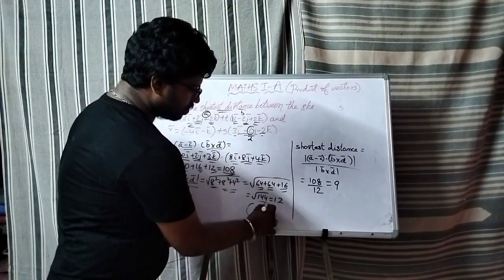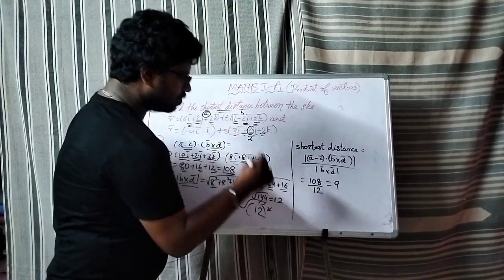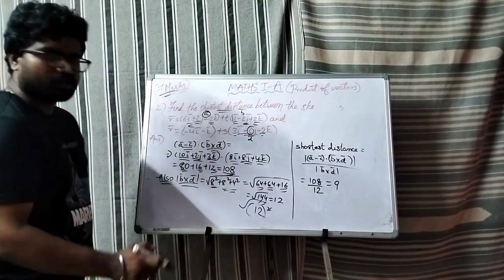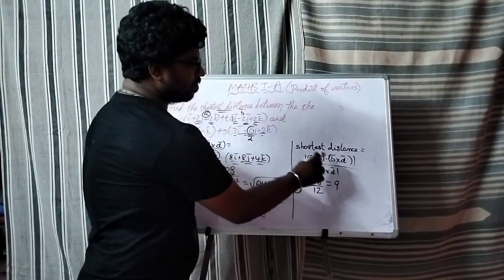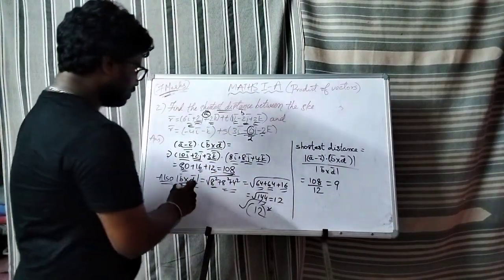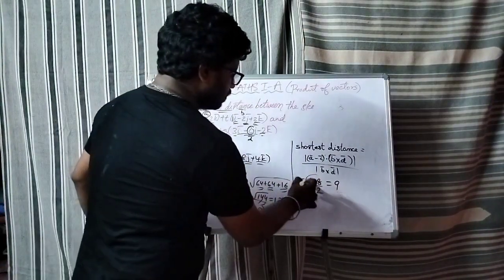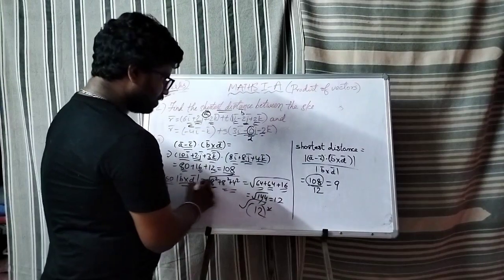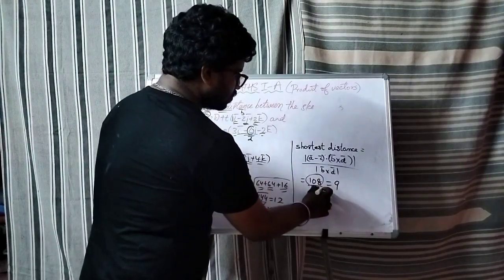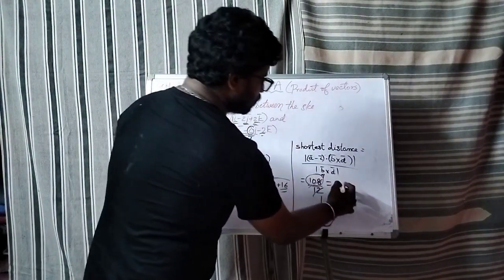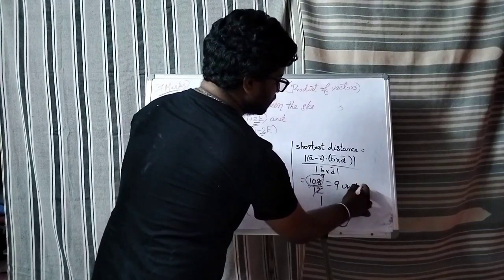So shortest distance formula gives a bar minus c bar dot b bar cross d bar, which is 108 divided by modulus 12. 108 by 12 is 9, so shortest distance is 9 units.